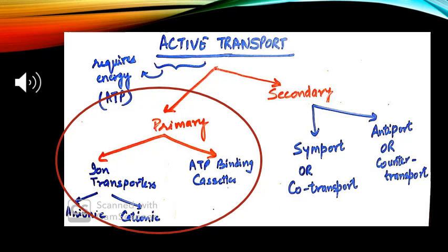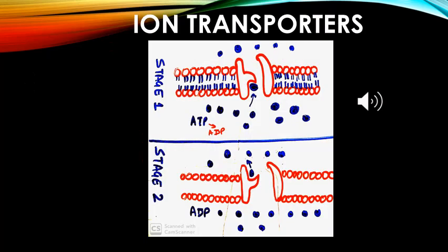Ion transporters are further divided into anionic and cationic organic transporters. Secondary active transport is further classified as symport and antiport transport systems. In primary active transport the process transfers only one ion or molecule in only one direction. In secondary active transport, two molecules are involved, either in the same direction or opposite directions.